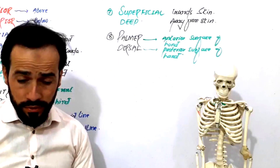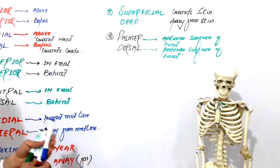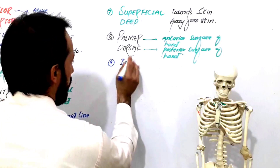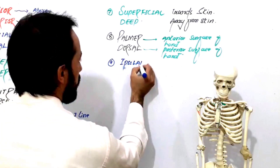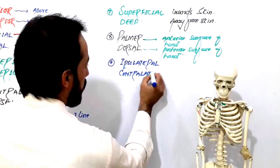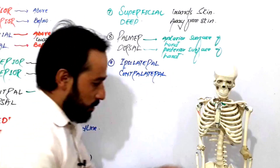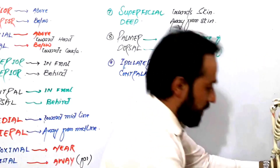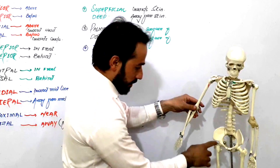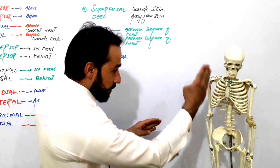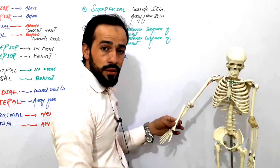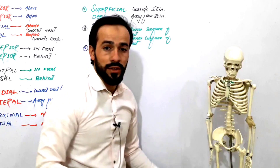The next term is ipsilateral and contralateral — number nine. What does it mean? Look carefully: this is the right upper limb and this is the right lower limb. When we say the same side of the body, this is called ipsilateral. But if we say the right upper limb and the left lower limb, this is called contralateral.